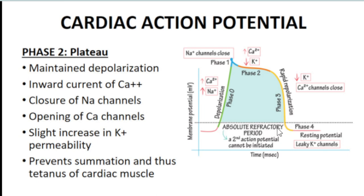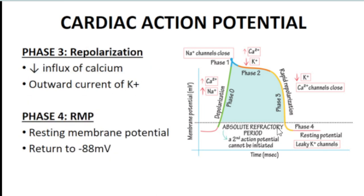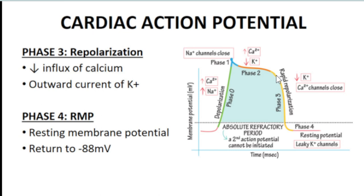Phase 3 is repolarization: calcium channels close, stopping both sodium and calcium influx. Potassium channels open more fully, causing the membrane potential to drop until it reaches Phase 4 — the resting membrane potential — at approximately negative 88 to negative 90 millivolts.